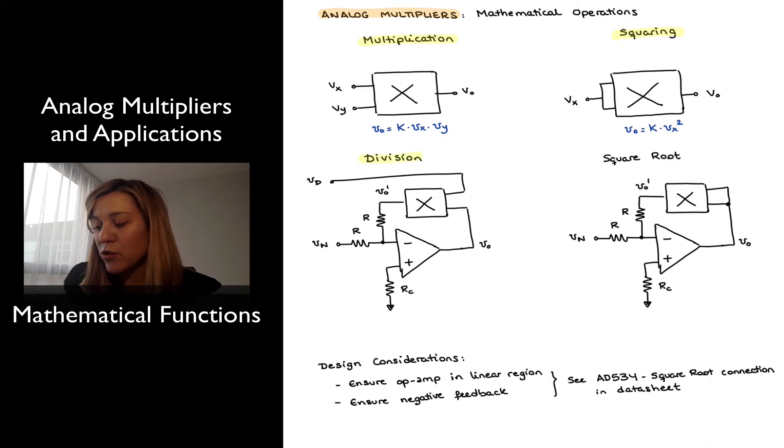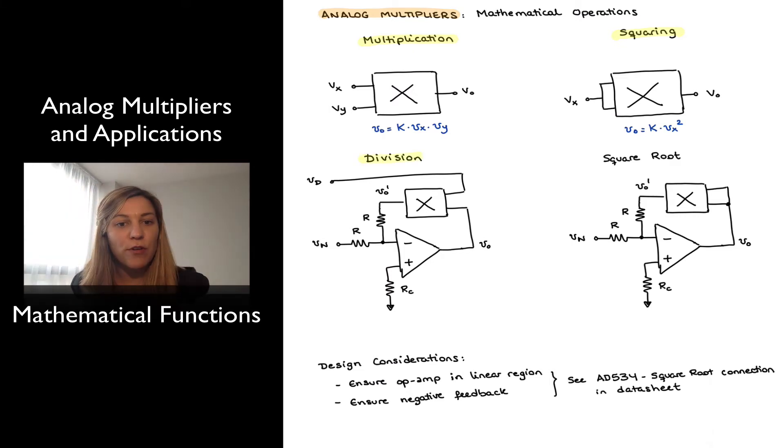In terms of division, there are different possible configurations, and if you look at the data sheet for an analog multiplier, it may provide some of the preferred configuration for a division. But this is a common configuration, where we can see two signals are being applied, a numerator and the denominator.